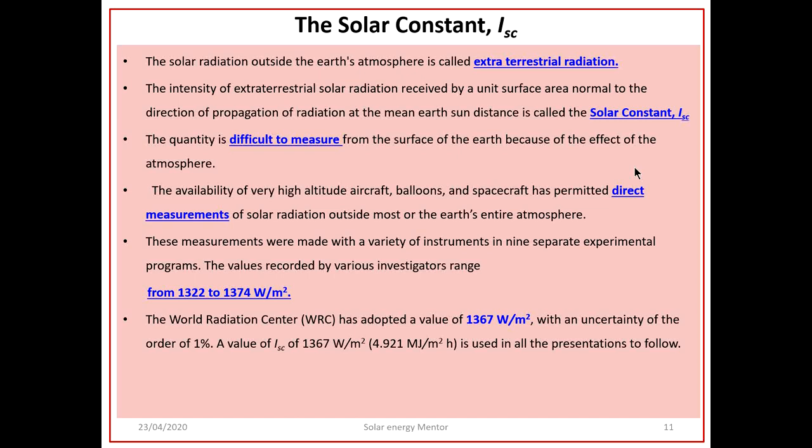High-altitude aircraft, balloons, and spacecraft have permitted direct measurements of solar radiation outside Earth's atmosphere. Measured values ranged from 1322 to 1374 W/m². The World Radiation Center (WRC) has adopted a value of 1367 W/m² with an uncertainty of ±1%, which is acceptable. This value of 1367 W/m² is used in all subsequent calculations.